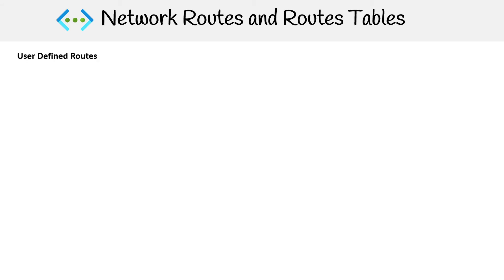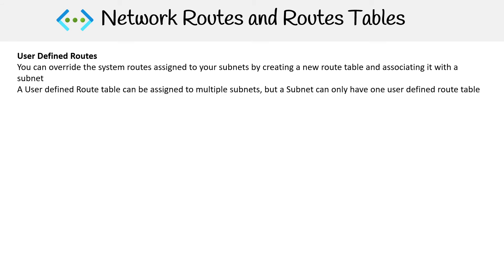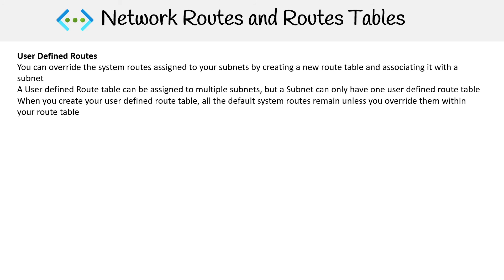Now let's talk about applying our own routes, called user defined routes. You can create a route table and assign it to an actual subnet. A route table can be assigned to multiple subnets, but a subnet can only have one user defined route table. If you want to override existing routes, you just create a route and it will override the default one.